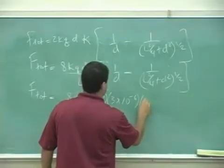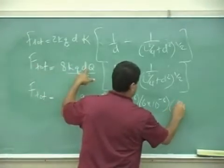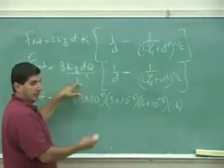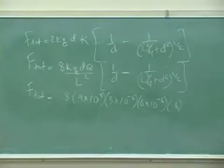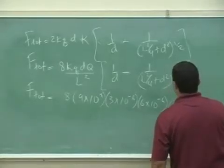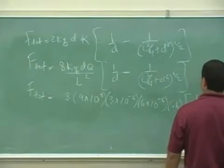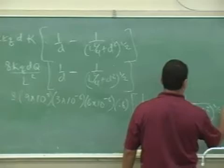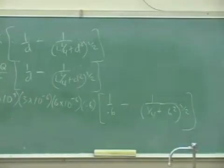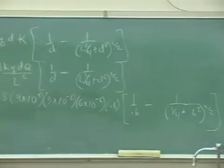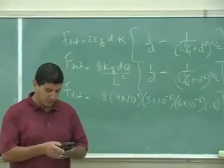And then that one was 6 times 10 to the minus 6. And then the distance d was the 0.6, right? The length was 1 meter, so that one squared is just 1. And then over here, you should do all of that, it's a longer calculation, but you should get a number less than 0.019. Let's see, I'll do it along with you here.